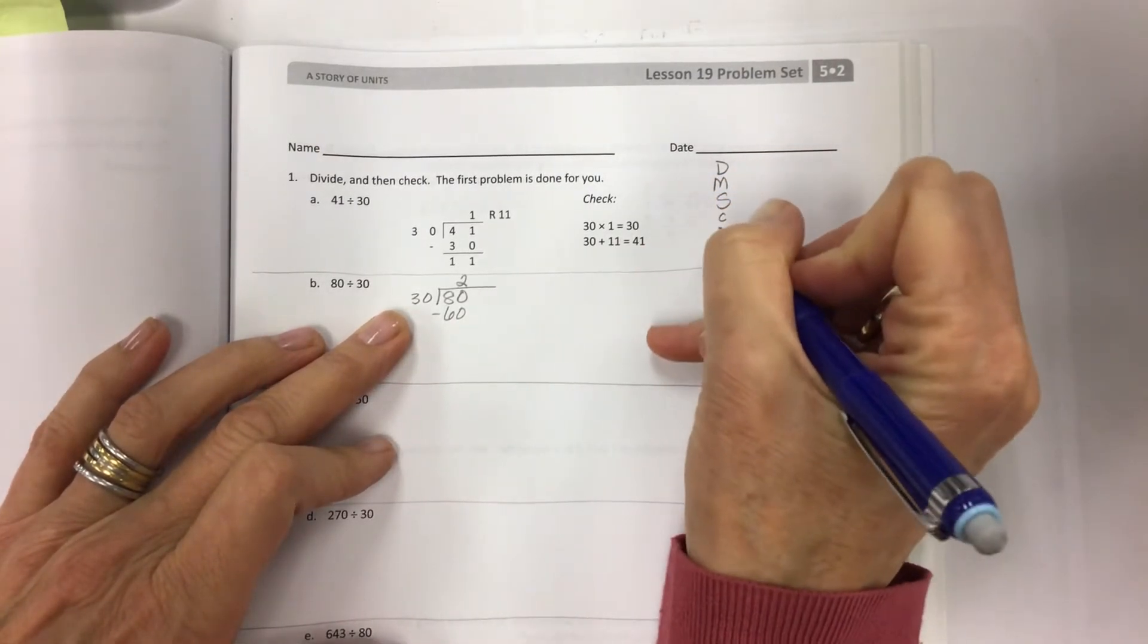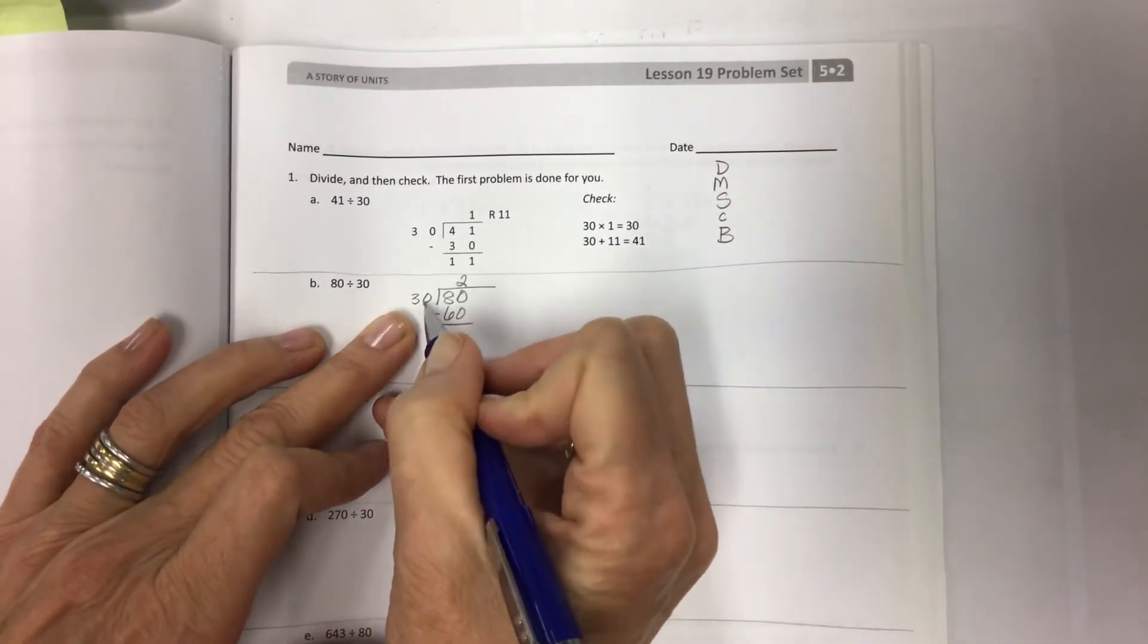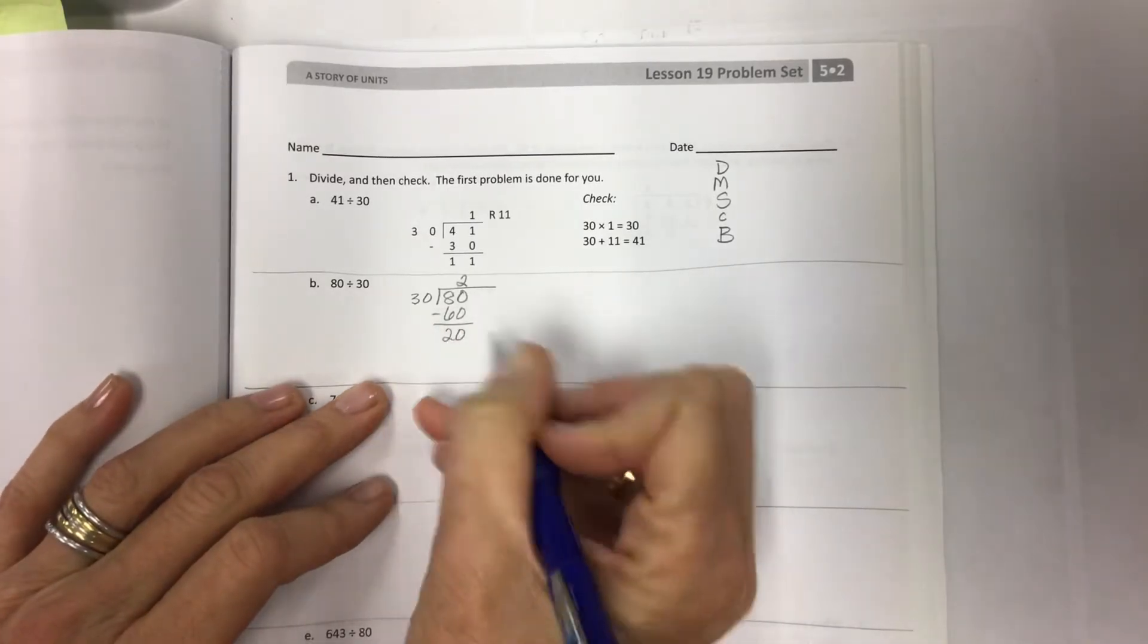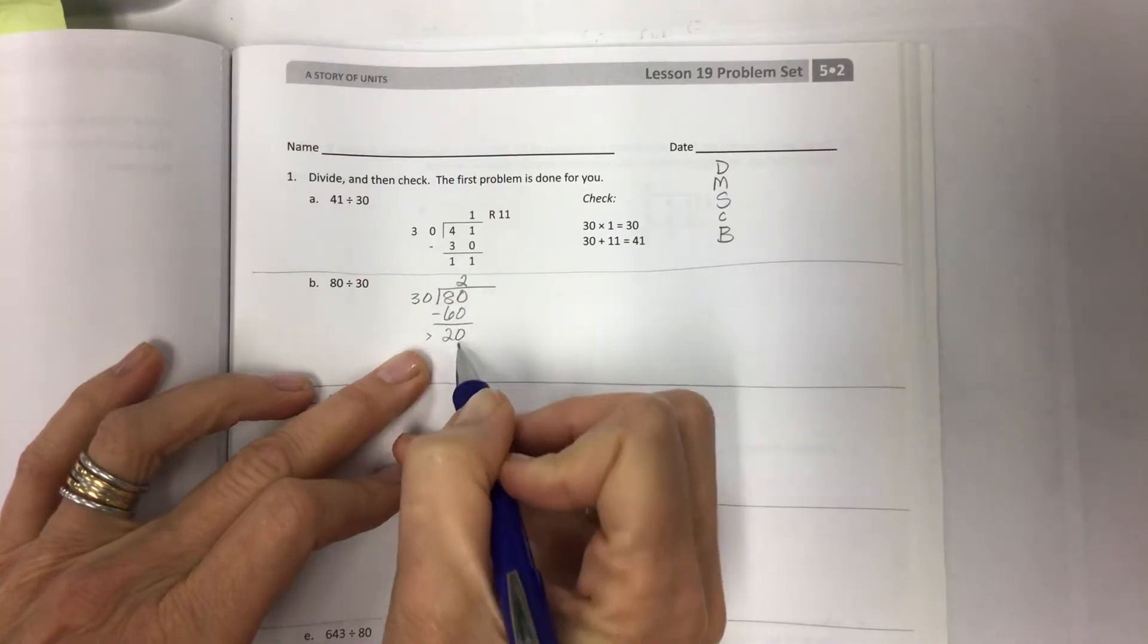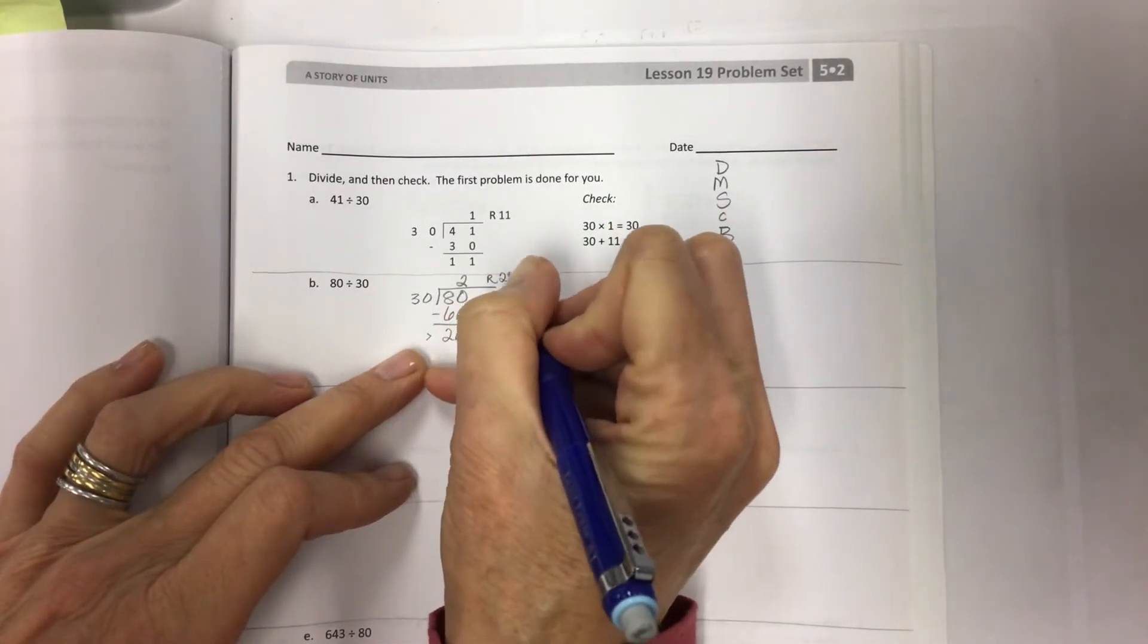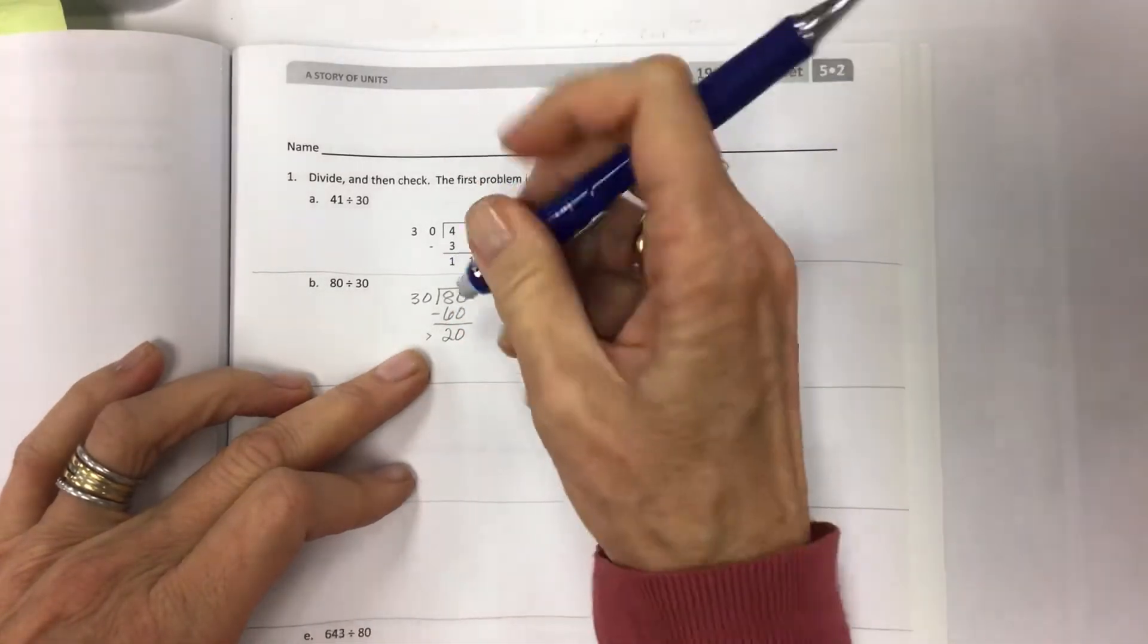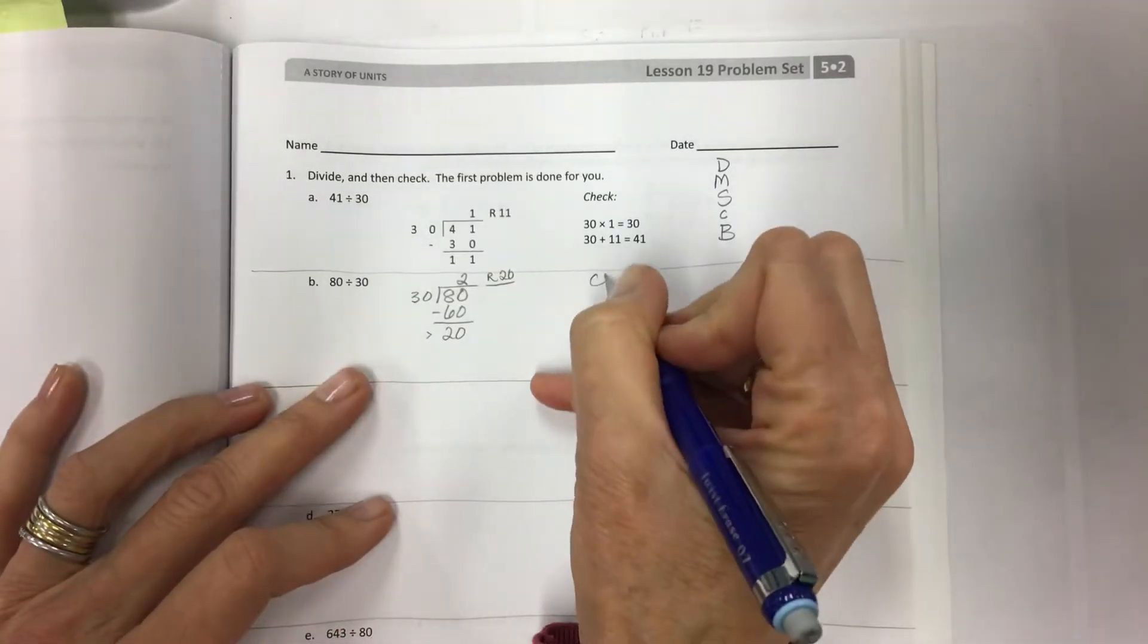Divide, multiply, subtract, compare, bring down. And so we did the divide. Now I did the multiply. Put that answer here. Subtract. I get 20. Remember to compare. I need this to be less than my divisor, and it is. So I'm going to put my remainder right here. Remainder 20. Just like I did here. It doesn't have to be connected.